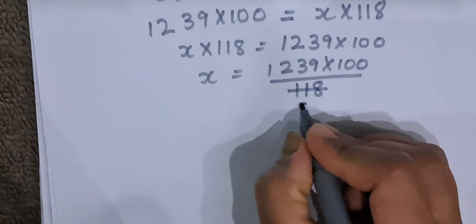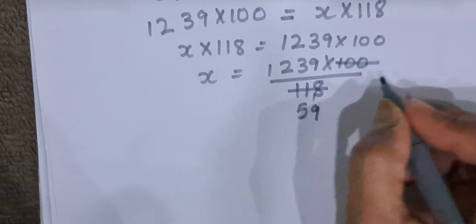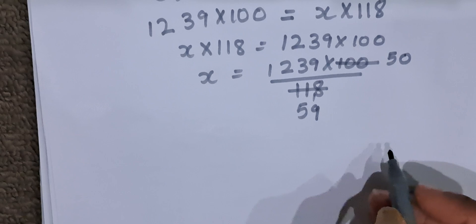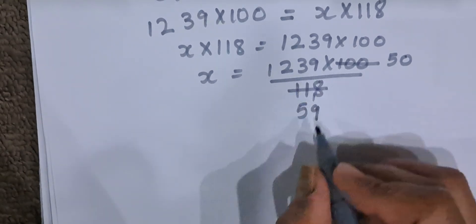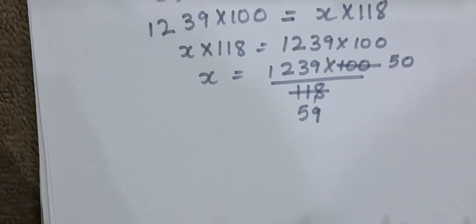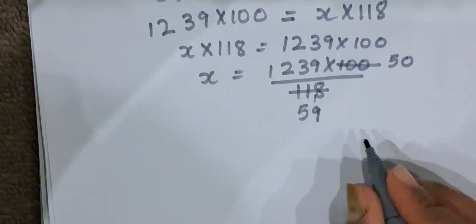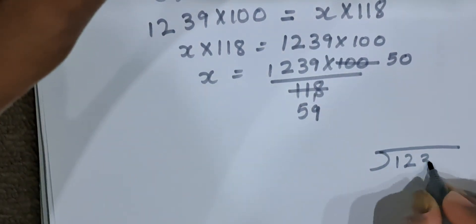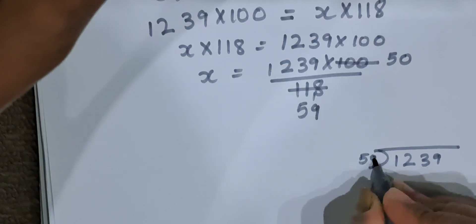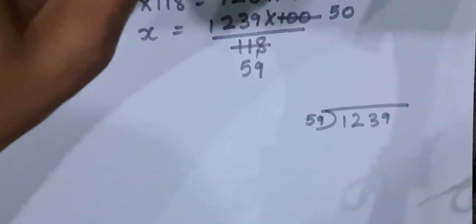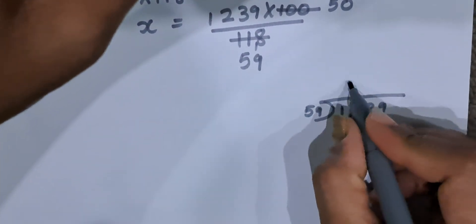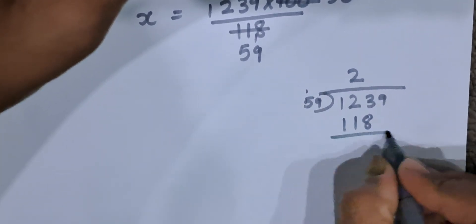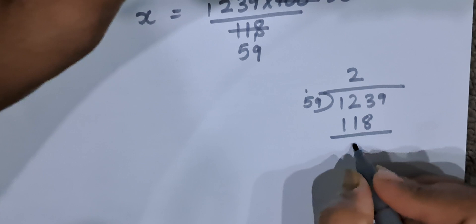2 times 50 is 100. 2 times 59 is 118. So it will be 1239 upon 59. Let us do 1239 divided by 59. 59 times 2 is - 9 times 2 is 18, 5 times 2 is 10, 11 - 118. It will be 1.